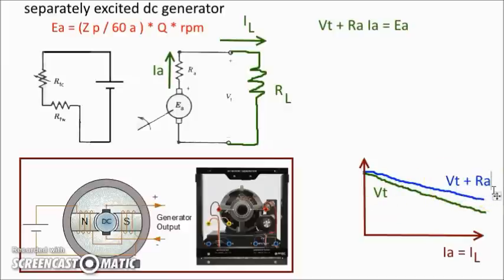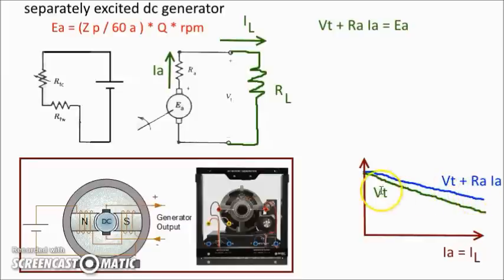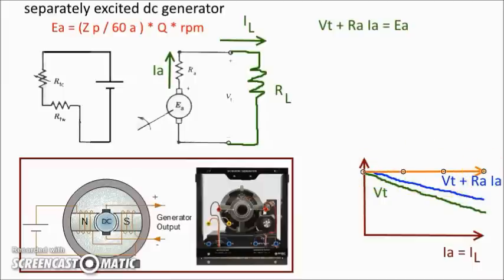When you draw the figure using Excel, you see that Vt + Ra × Ia does not produce a flat line. That means there's a difference between the open circuit voltage Ea and Vt + Ra × Ia.